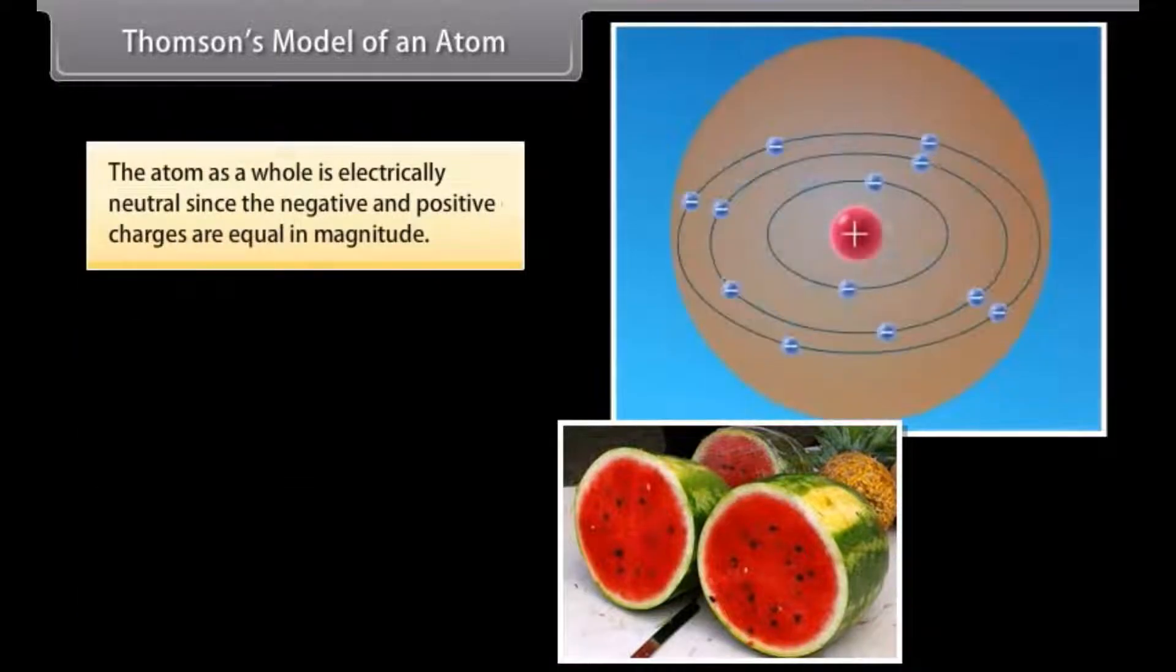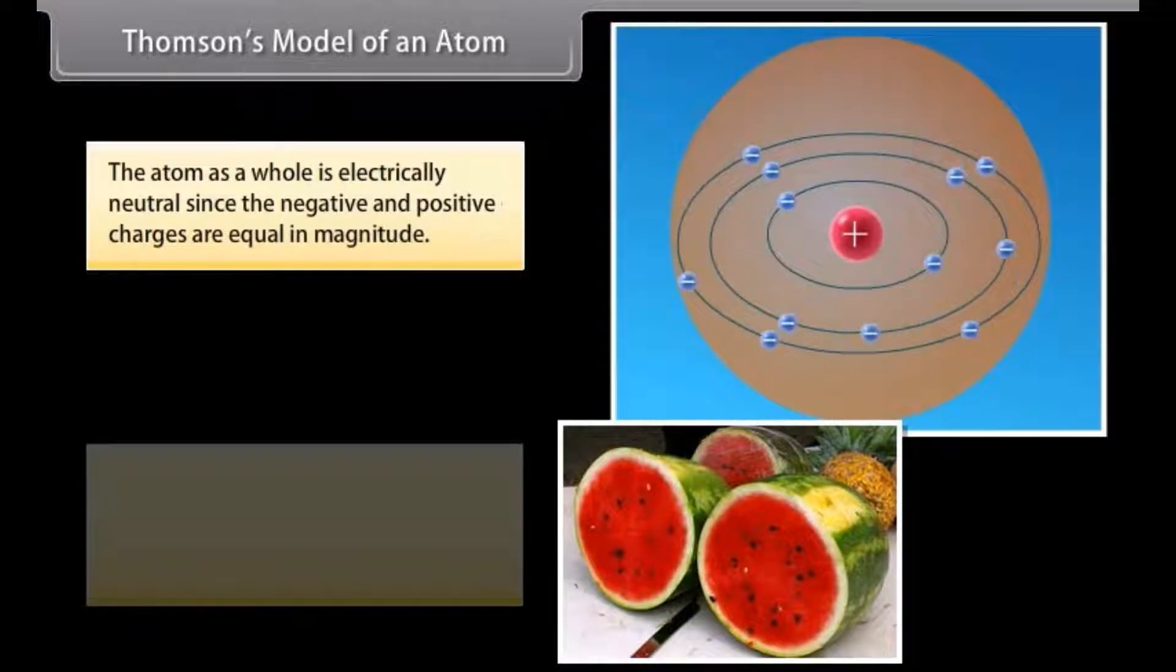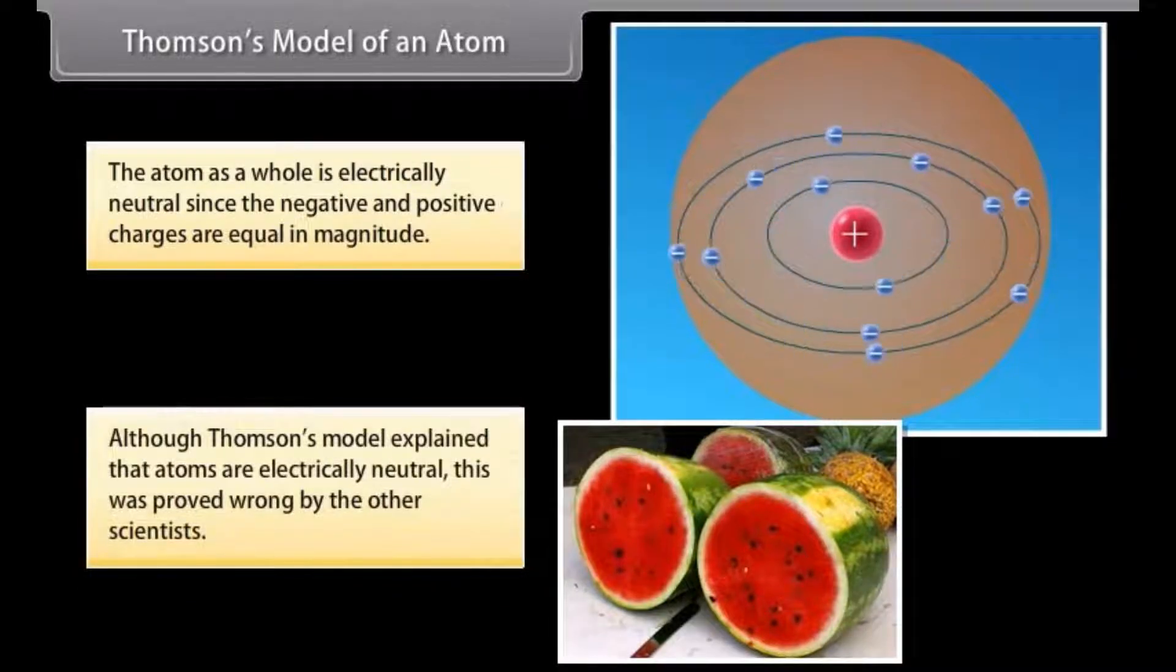Thompson stated that an atom consists of a sphere with positive charge. Electrons are embedded in that sphere. The atom, as a whole, is electrically neutral since the negative and positive charges are equal in magnitude. Although Thompson's model explained that atoms are electrically neutral, this was proved wrong by the other scientists.